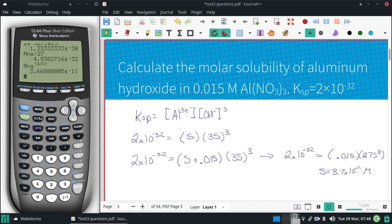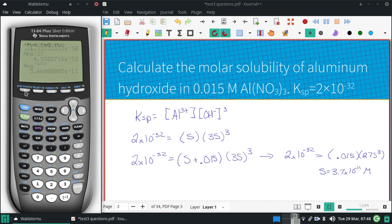And that is very small compared to that 0.015. So we can kind of guarantee that's a safe assumption. But just to see what happens, if you have the TI, we're going to plug it in with the S and the 0.015. So I'm going to put that in as an X.